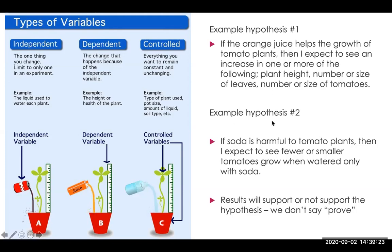Example hypothesis number two: if soda is harmful to tomato plants, then I expect to see fewer or smaller tomatoes grow when watered only with soda — I could even add that I expect the plant to die. One thing not included in these hypotheses is the amount of time and how frequently measurements would be taken. In the background research, you would need to know the typical growth time for tomato plants, the appropriate time of year, how much sunlight, and you would need to control all of those variables so they stay constant while you run the experiment.